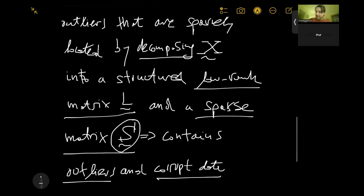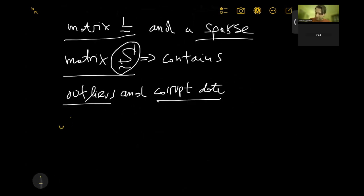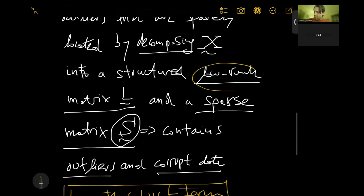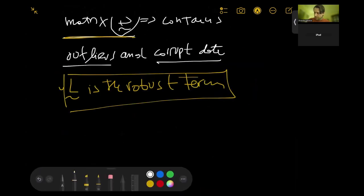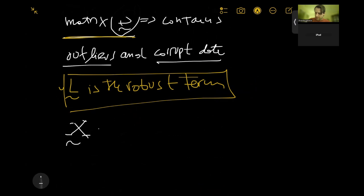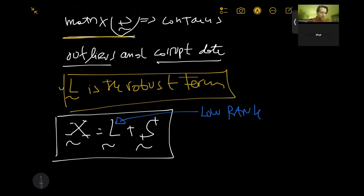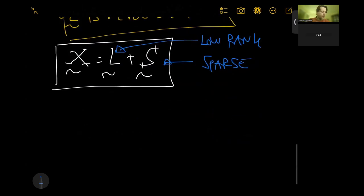So in this type of decomposition, our matrix L is the robust term. It's the robust part of our robust principal component analysis. So this low-rank matrix L will contain the good data, and this sparse matrix S will contain the outliers or corrupt data. So basically, we can write our decomposition like this: X equals L plus S. This is the matrix decomposition where the matrix L is low-rank and this matrix S is going to be sparse.